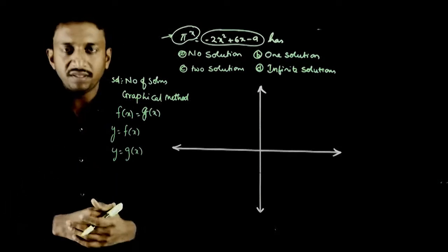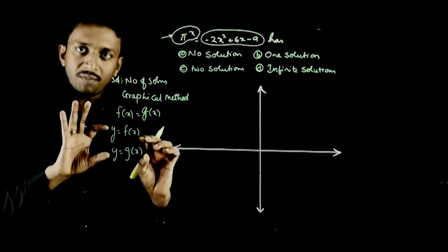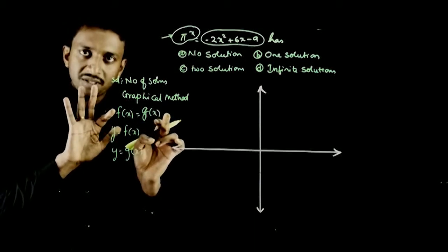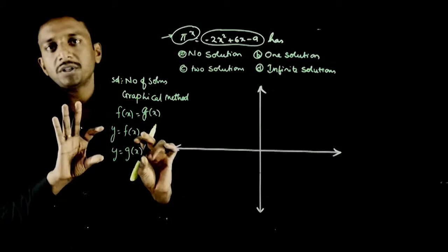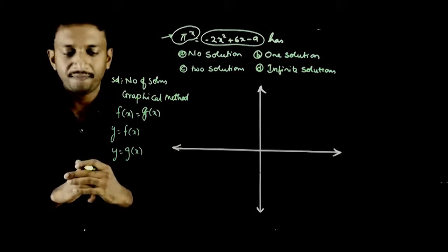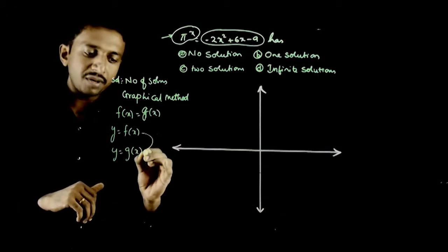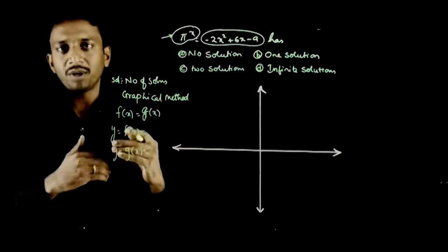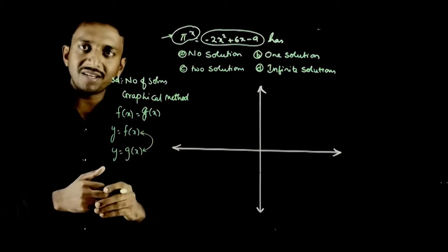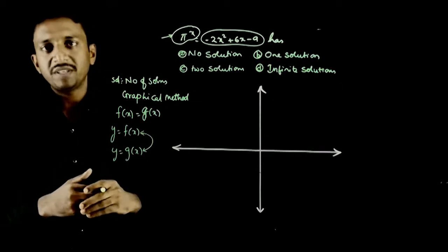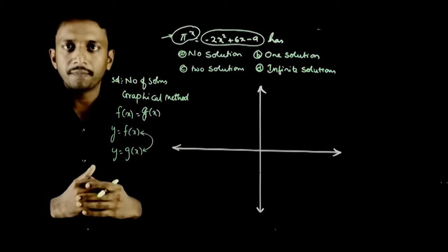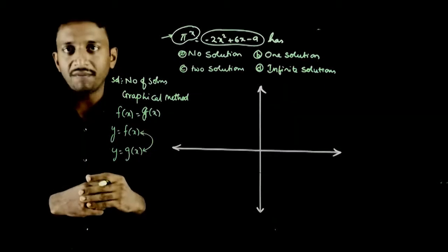So once I draw the graphs, the number of solutions to this equation is nothing but the number of points of intersection of these two graphs. If you observe these two graphs, how many points they intersect at? If one point, one solution; two points, two solutions and so on. If they do not intersect, that means you have no solution.